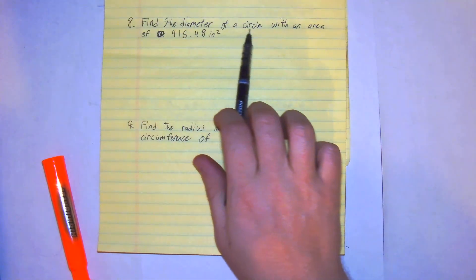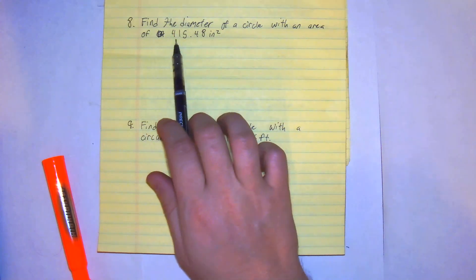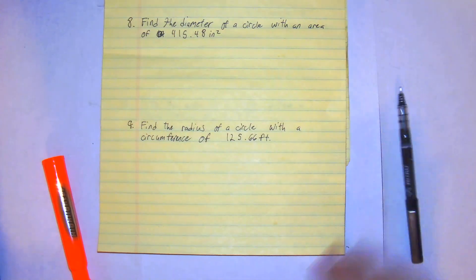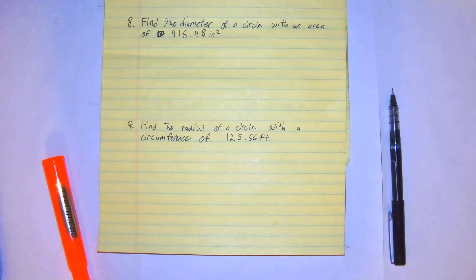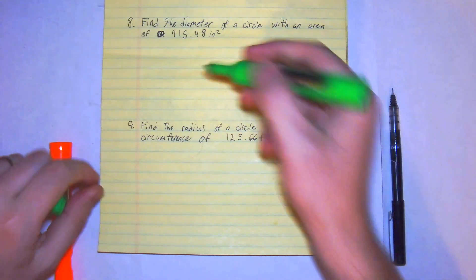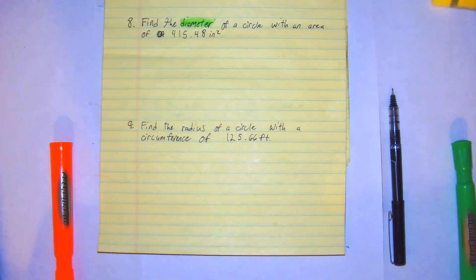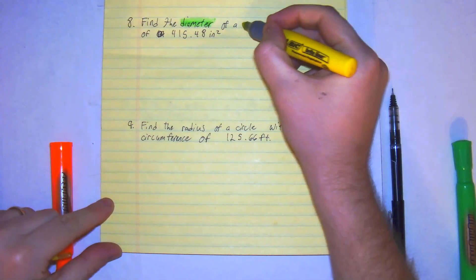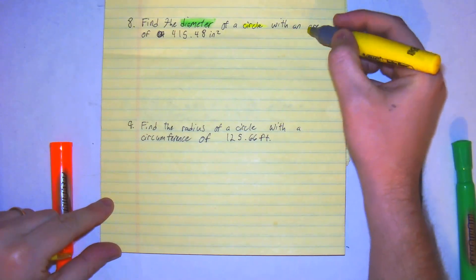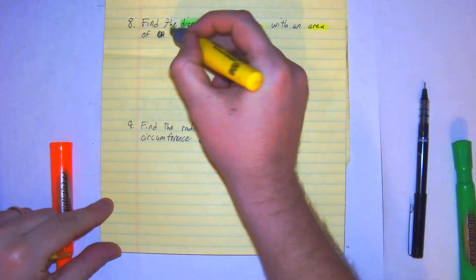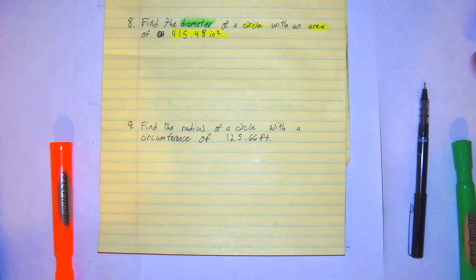Number 8 says find the diameter of a circle with an area of 415.48 inches squared. So this one's a little different because we're given an area and trying to find a diameter of a circle with an area of 415.48 inches squared.